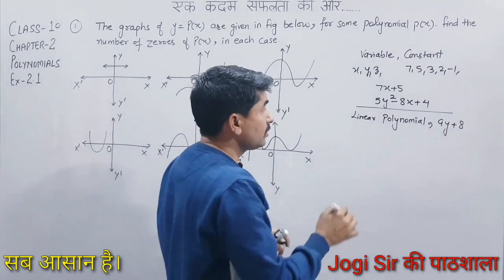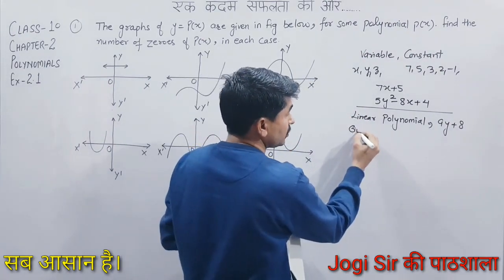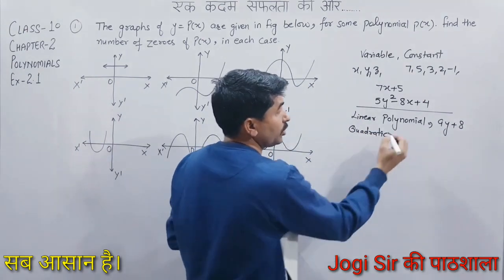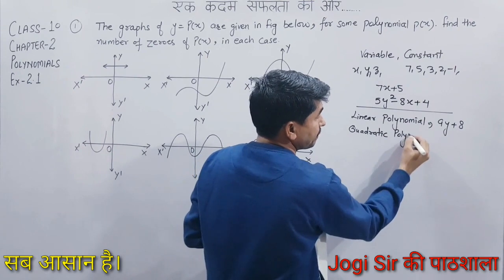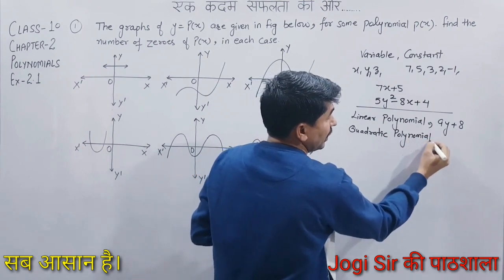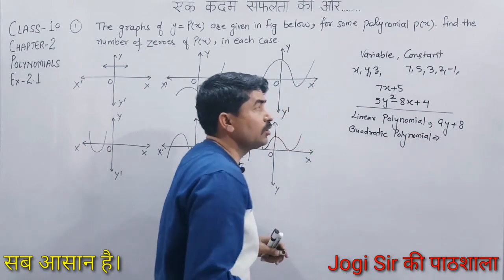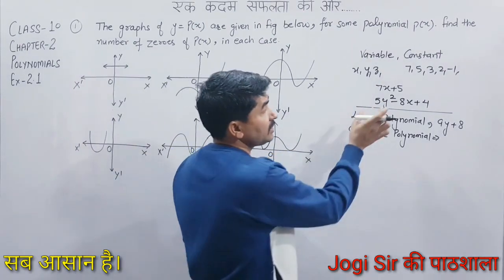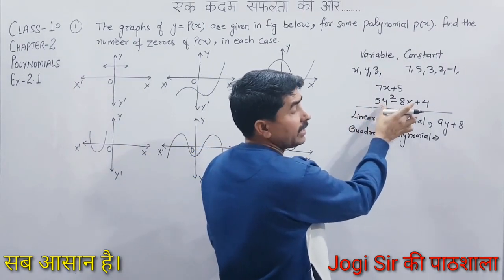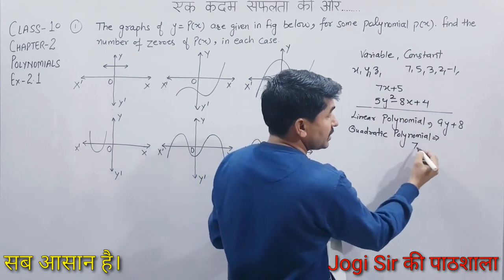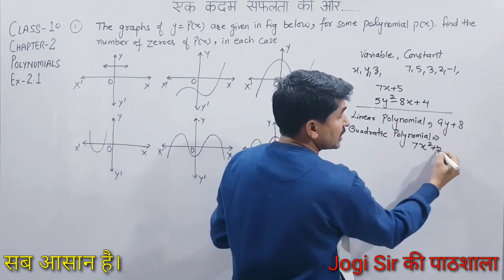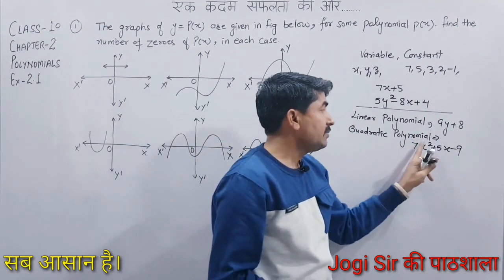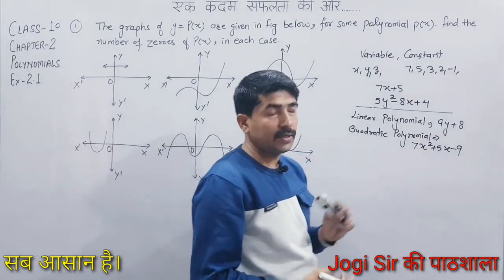Then there is the quadratic polynomial. In a quadratic polynomial, the highest degree of the variable is 2. It can be in two variables or even a single variable. For example, 7x squared plus 5x minus 9 is a quadratic polynomial. Its degree is 2, which is why it is called quadratic.